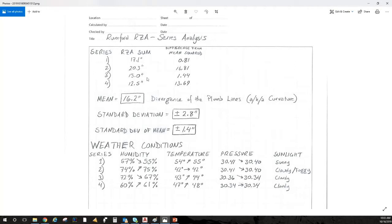Here are the sums: 17.1 from the 9th of October, 20.3 from the 10th of October, 15 and 12.5 both from the 11th of October, one immediately following the other. So the overall mean of that is 16.2 seconds. So that's what I measured across all four series - 16.2 second divergence of the plumb lines.